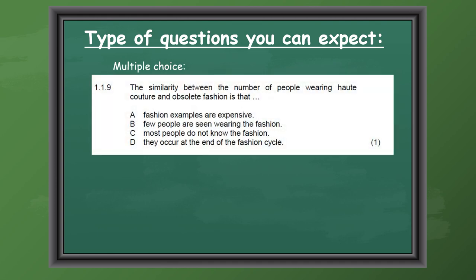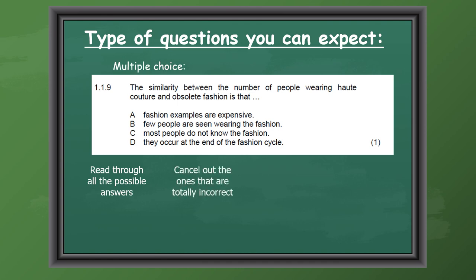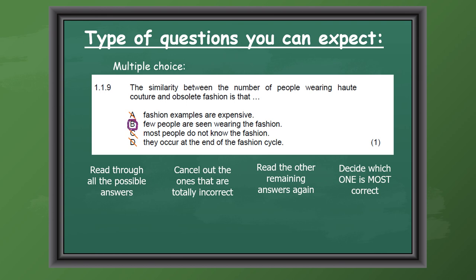Now we're going to look at different types of questions that can be expected in Section A. First, multiple choice. It is very important that you start off by reading through all the possible answers, then cancel out the ones that are totally incorrect, then read the remaining answers again and decide which one is most correct. In this case, the similarity between the number of people wearing haute couture and obsolete fashion is that B — few people are seen wearing the fashion.